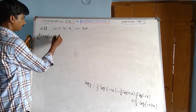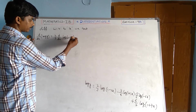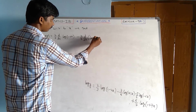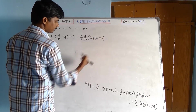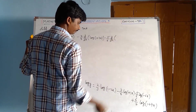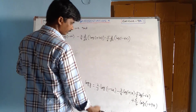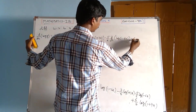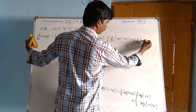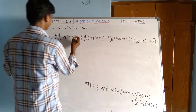d/dx of log y equals 2/3 · d/dx of log(1 minus 2x), minus 3/4 · d/dx of log(1 plus 3x), minus 5/6 · d/dx of log(1 minus 6x), plus 6/7 · d/dx of log(1 plus 7x).